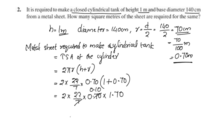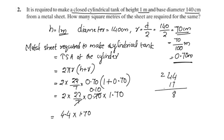This equals 44 into 0.10 into 1.70, giving 44 into 1.70. Carrying out the multiplication: 44 into 17 gives 748.